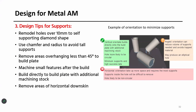Design tips for support structures: remodel holes — if you have holes, change the cross section to a diamond shape. Try to use chamfers wherever possible and avoid sudden changes in the cross section. Remove overhangs — try to have the overhang angle greater than 45 degrees, which doesn't need any support structure.